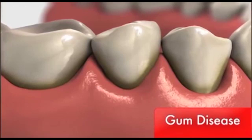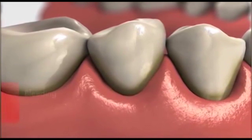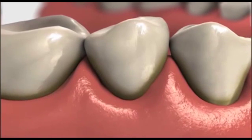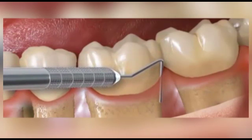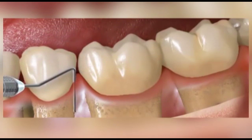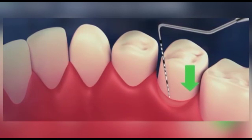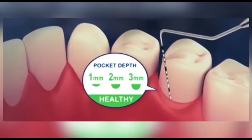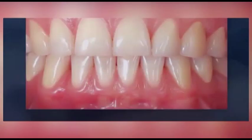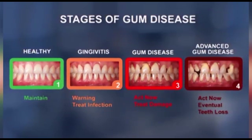If left untreated, gum disease can progress and lead to bleeding, tooth loss, and damage to bone and mouth tissues. The presence of gum disease is detected using a routine periodontal exam, which includes a gentle probing of the area between teeth and gum, or gum pockets. The deeper the measurement, the more severe the infection. Healthy teeth and gums are indicated by a pocket depth of 1 to 3 millimeters with no bleeding and sensitivity. Gum disease is present in over 75% of the adult population and exists in various stages of severity.